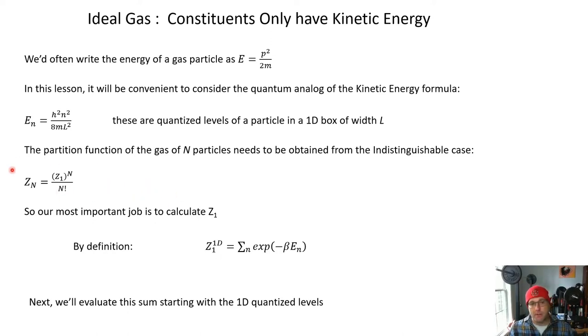So our most important job in applying this formula, we know what N is. It's essentially a given, but we need to figure out how to get a useful expression for Z_1 of the ideal gas. And so Z_1 for a one-dimensional particle in a box is going to be sum on all the possible quantum numbers n, e to the minus beta E_n. That's just the definition of the partition function. Again, this is a single particle case, not a composite case. So we need to evaluate this sum.